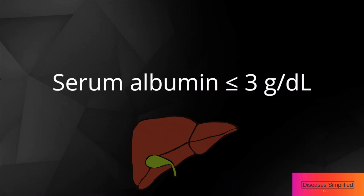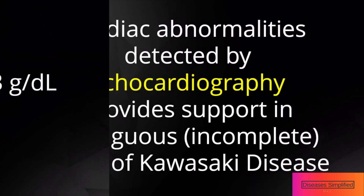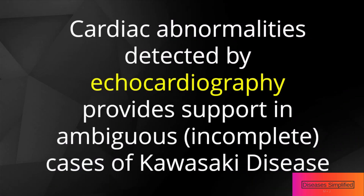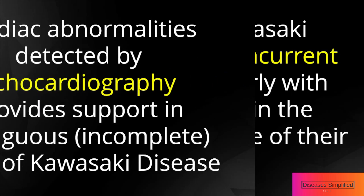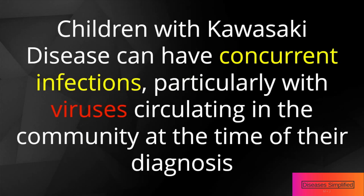Serum albumin less than or equal to 3 grams per deciliter. The presence of cardiac abnormalities detected by echocardiography provides support in ambiguous, incomplete cases of Kawasaki disease. Children with Kawasaki disease can have concurrent infections, particularly with viruses circulating in the community at the time of their diagnosis.